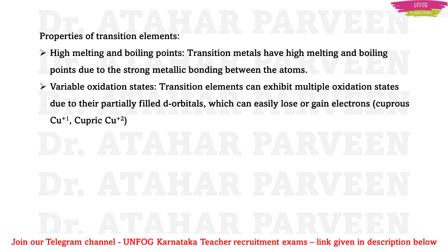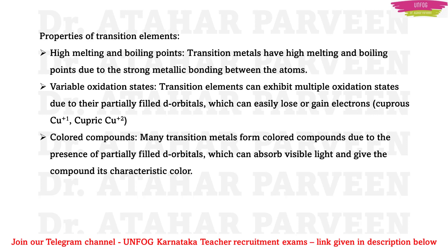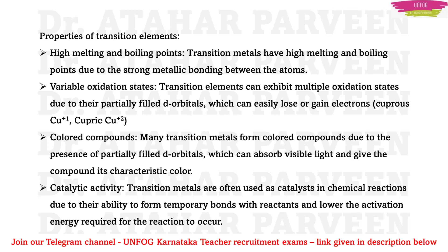Transition elements can exhibit multiple oxidation states because they have partially filled d orbitals, which can easily lose or gain electrons. For example, copper has two oxidation states: Cu⁺ (cuprous) and Cu²⁺ (cupric). Many transition metals also form colored compounds because their partially filled d orbitals can absorb visible light and give the compound its characteristic color.